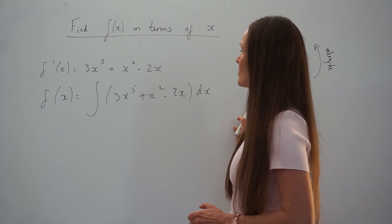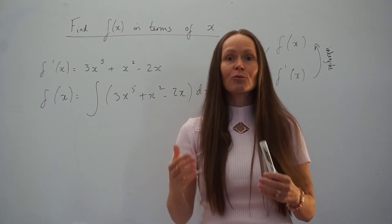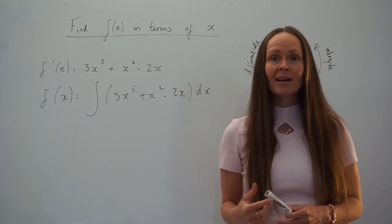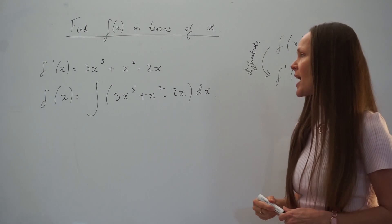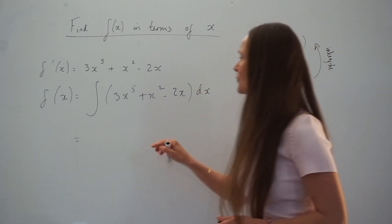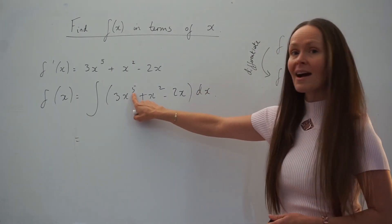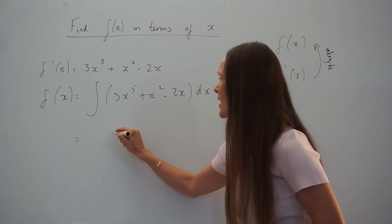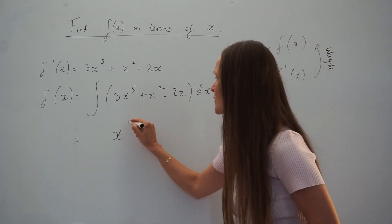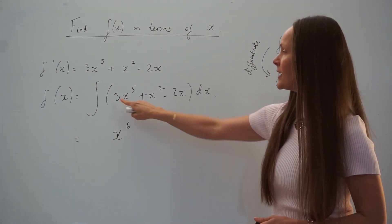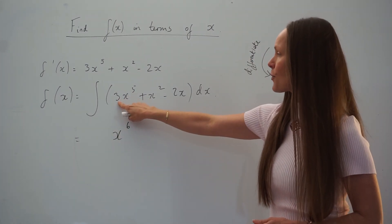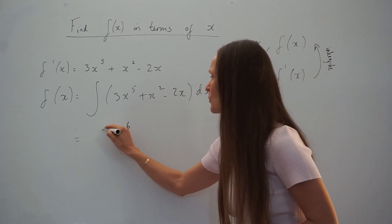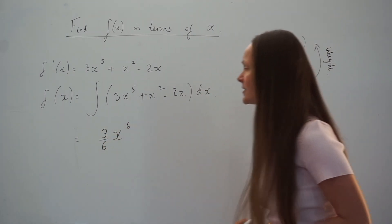When you're integrating, you're raising the power on the x by 1 and dividing by the new power. So if we look at the first term here, I add 1 to 5 and get 6, so we have x to the power of 6. Then we're dividing the coefficient 3 by the new power, which is 6. So 3 over 6 — I'll simplify later.